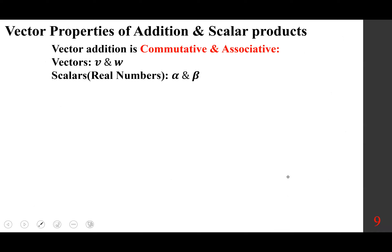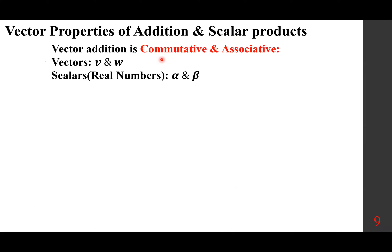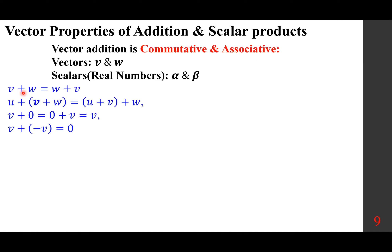Vector properties of addition and scalar products. Vector addition is commutative and associative. Commutative means order is not important: v plus w equals w plus v. Associative means when you have more than two vectors, u plus v plus w — you can add them up in any order. So these properties say order is not important; add them up in any order.